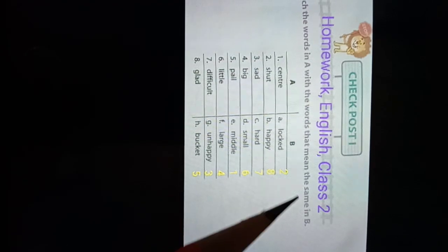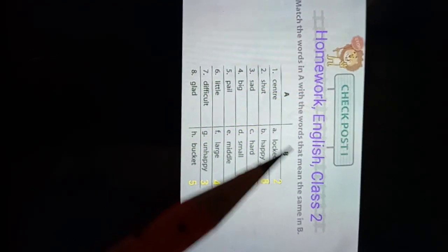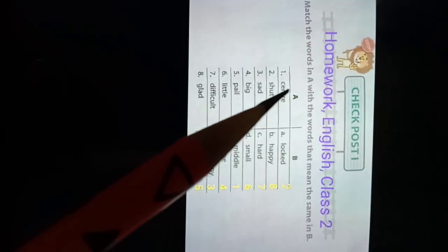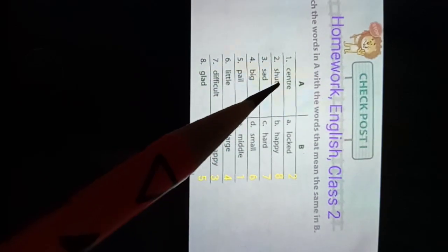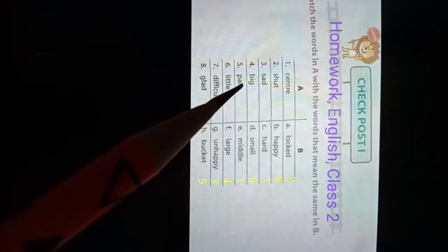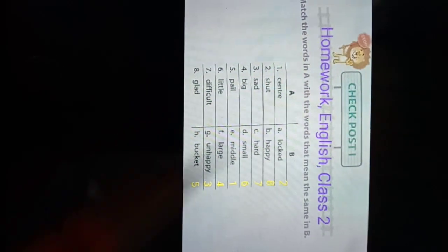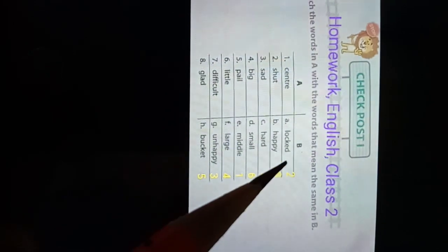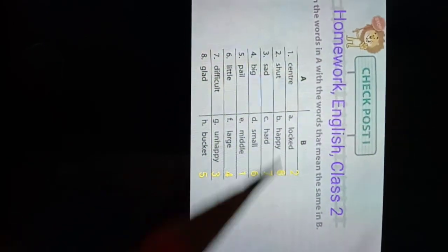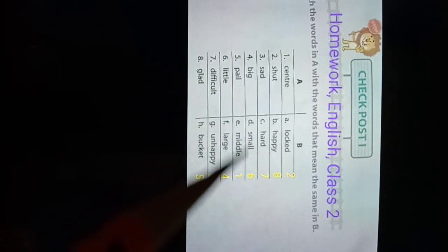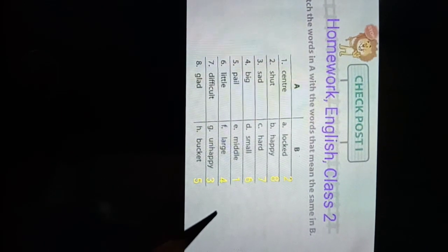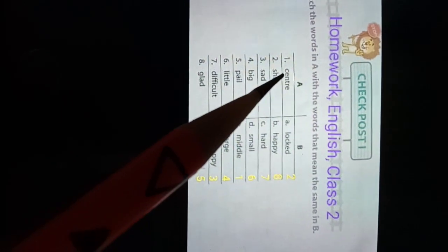Column A: center, short, sad, big, pale, little, difficult, glad. Column B: locked, happy, hard, small, middle, large, unhappy, bucket. You have to match the words. Number one is center.